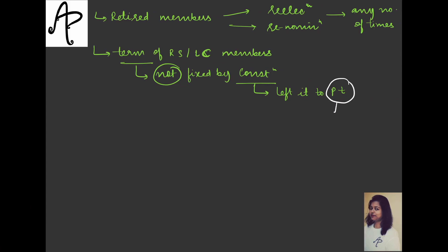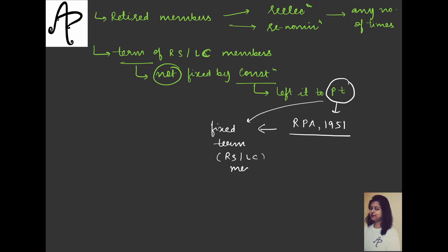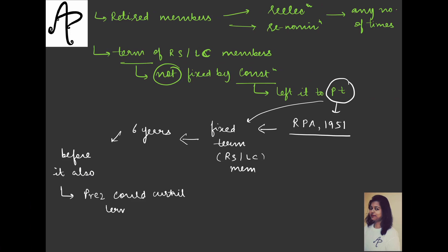What Parliament did was, when they enacted the Representation of People's Act 1951, through this act Parliament fixed the term of Rajya Sabha and Legislative Council members to six years. However, before that, there was also a provision where the President could curtail the term - this was mostly with respect to the first elections.